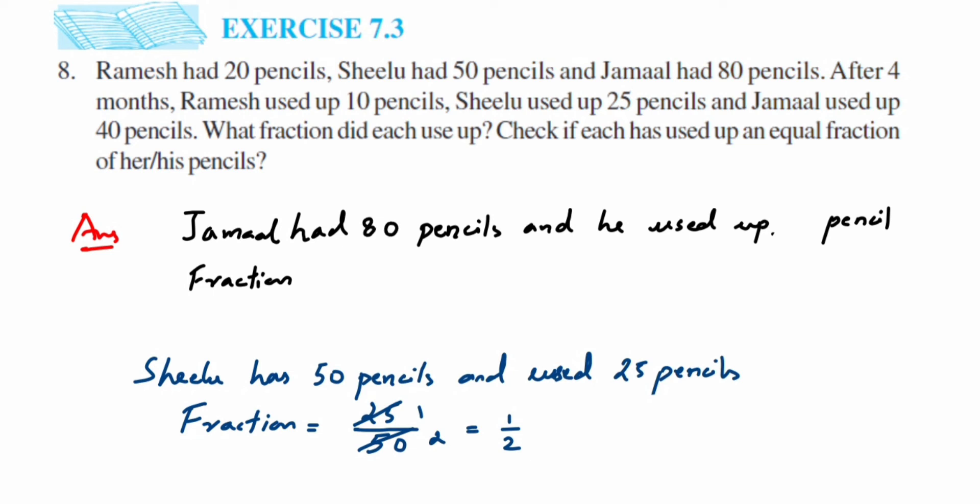Jamaal had 80 pencils and he used up 40 pencils. So fraction will be equal to, it's again the same thing: out of 80 pencils he used 40, so it will be 40 upon 80. Now we can cancel 40 and 80. You can cancel in 4 table or directly in 10 table, it's up to you.